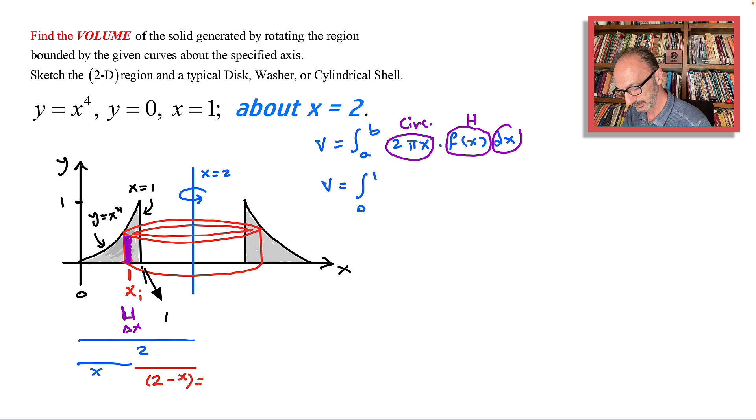That is the radius. So going back to the integration, 2 pi times the radius, and that is 2 minus x. The height is f of x, which is x to the 4 dx. We'll take 2 pi outside of our way, and we're going to multiply 2 minus x times x to the 4, just like this.